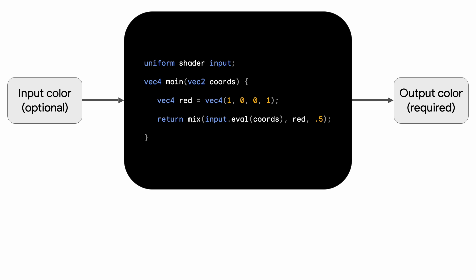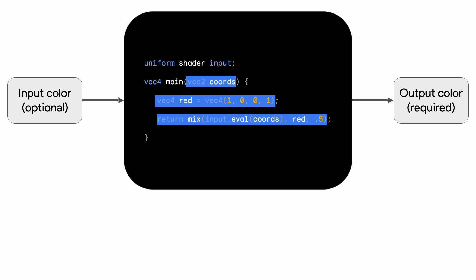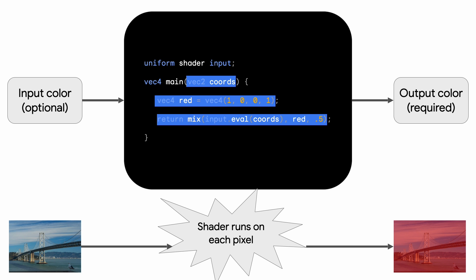Let's talk about what happens for a typical shader running on every pixel of an image. First, we have the input color — this is the color that would be used if we didn't have this extra shader logic. That goes in through our shader program, and out the other side comes the color we have computed. Looking at the shader code, we have the coordinates — the XY location of this pixel in the overall rendering surface. Here I'm creating a static red color and doing a simple linear interpolation, mixing half red and half whatever the original color was. So we may have had an image coming in, and now we're tinting every single pixel red along the way.